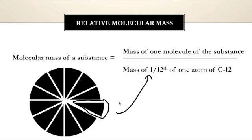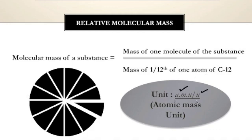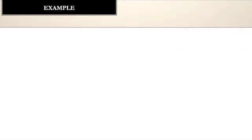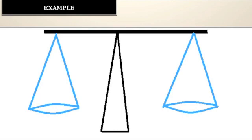After calculating the molecular mass, there should be a unit to represent it. The unit is generally called AMU, also expressed as 'u', and the full form is atomic mass unit. Some books use AMU, some books use u — both are correct.